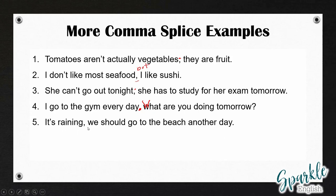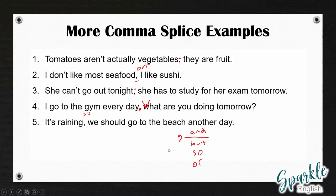And in the last one: 'It's raining, we should go to the beach another day.' So remember that a comma alone is not strong enough to connect two independent clauses. A comma can connect them with a conjunction like and, but, so, or — with the comma coming before the conjunction. Or we can use a semicolon to connect two closely related independent clauses. Or we can change the comma to a period and capitalize the beginning of the next sentence.